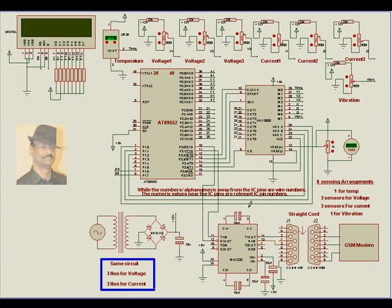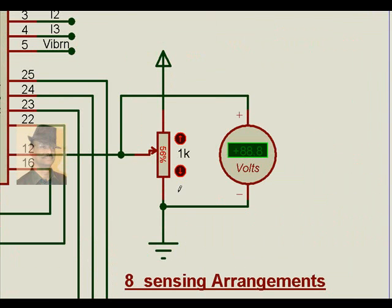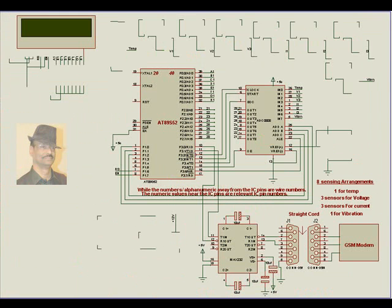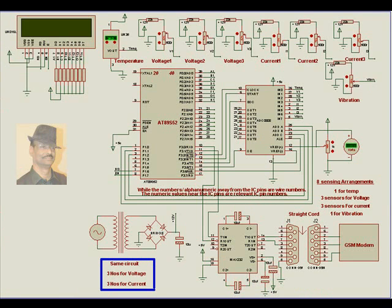Then we have the most important, that is the reference voltage to the ADC. The reference voltage to the ADC here is given through a potential divider. Once we operate this, we will see how it has an effect on the parameters, like for example for calibration purposes.